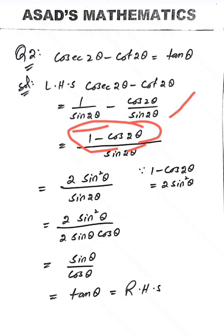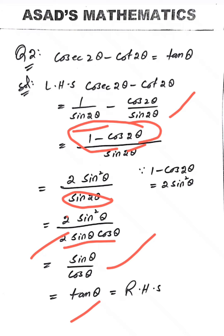We replace 1 minus cos 2θ with 2 sin² θ in the numerator, and apply the formula sin 2θ = 2 sin θ into cos θ in the denominator. Here 2 cancels with 2, and one sin θ cancels with sin² θ, leaving sin θ divided by cos θ, which equals tan θ, which is our right hand side.